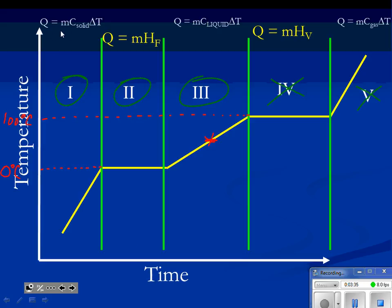Section one: Q is equal to M, the mass, times the specific heat of a solid, times the change in temperature. Section two: Q is equal to the mass times the heat of fusion. Remember, we cannot use any change in temperature because there's no change in temperature — that's zero degrees Celsius, the melting point of water. Section three: we have a change in temperature again. We're increasing temperature as a liquid, so Q equals mass times the specific heat of the liquid times the change in temperature of the liquid.